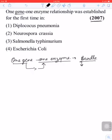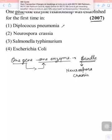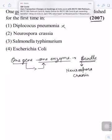Beadle studied this theory in Neurospora crassia. So we can see in the options: First is Diplococcus pneumoniae - this option is wrong. Second is Neurospora crassia